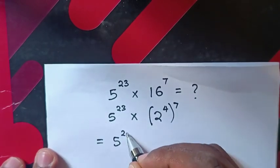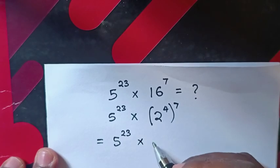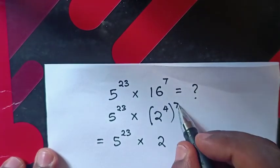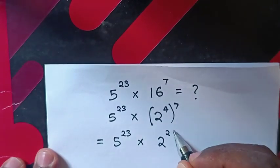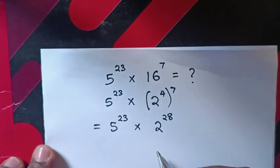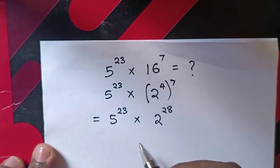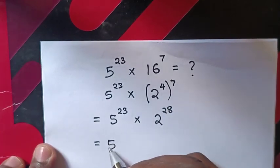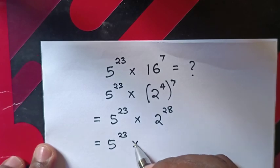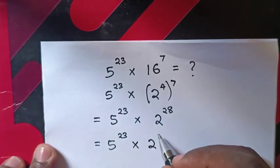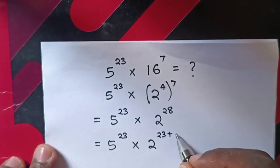This equals 5^23 times 2^28. Now you can see we have 23 and 28, so this equals 5^23 times 2^(23+5).